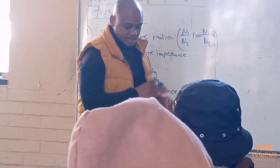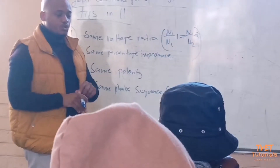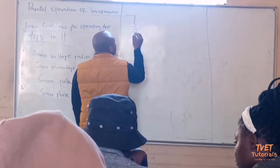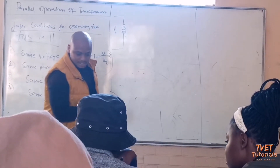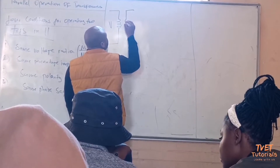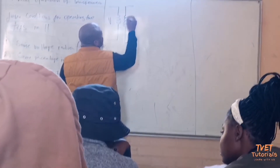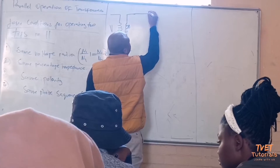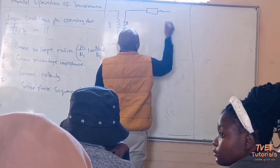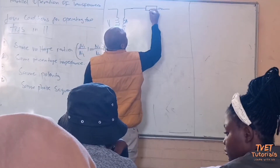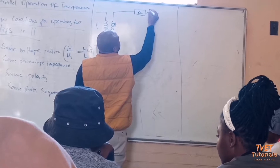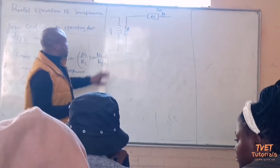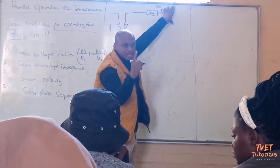Let us draw a basic diagram of connecting two transformers in parallel. Suppose I have a supply voltage V1, then I add the windings of transformer A. This transformer A has its own impedance — let's call it RA and XA, so these two give you ZA. This represents transformer A.